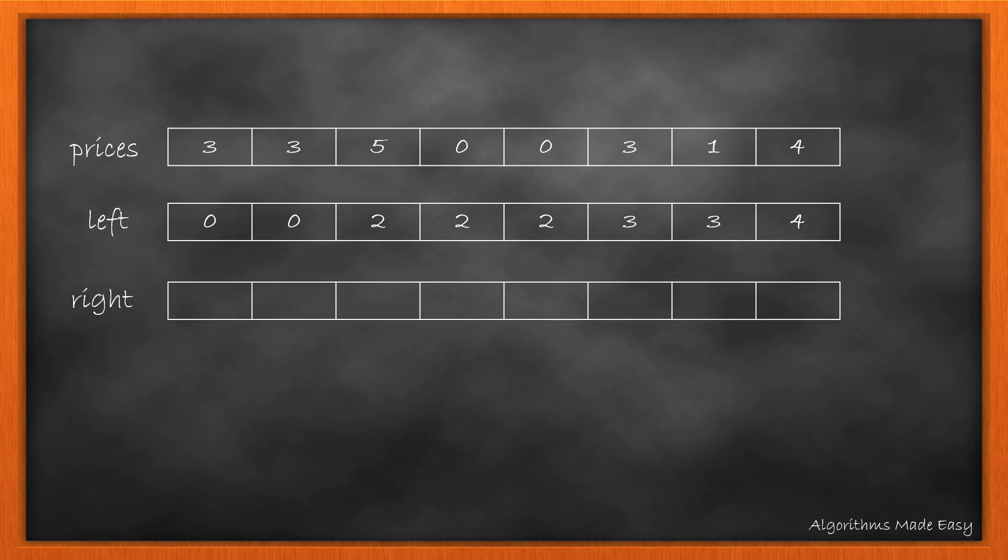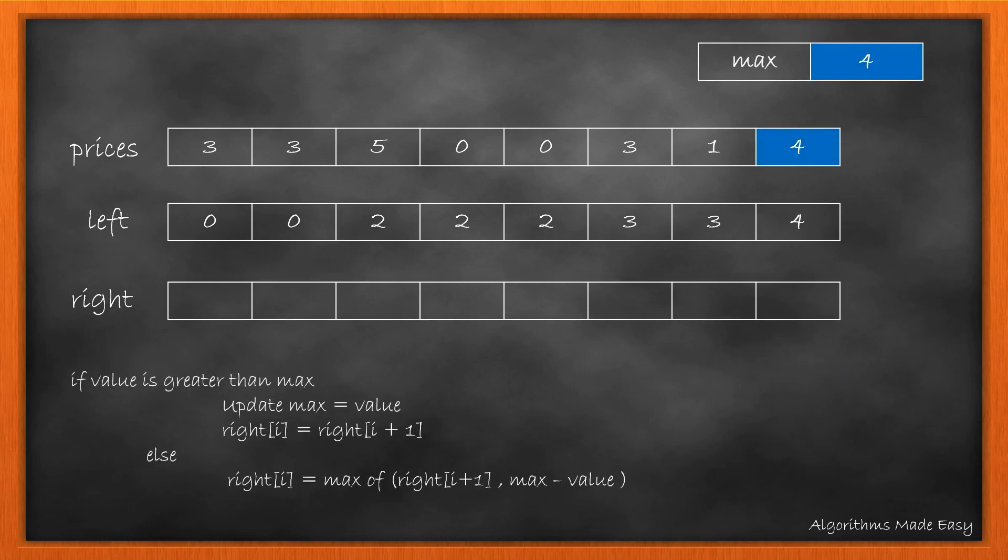To do that we will take one more array right of the same size as left. This array will give us the profit from the right hand side of the array. We will take the same approach as left. The difference is that we will take the maximum instead of minimum and will be initialized with the last value of the price array. Following the same logic we will get the right array.